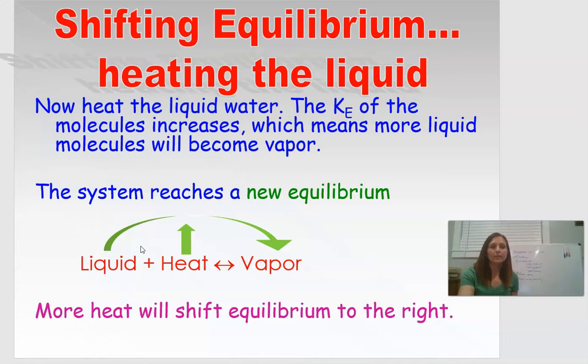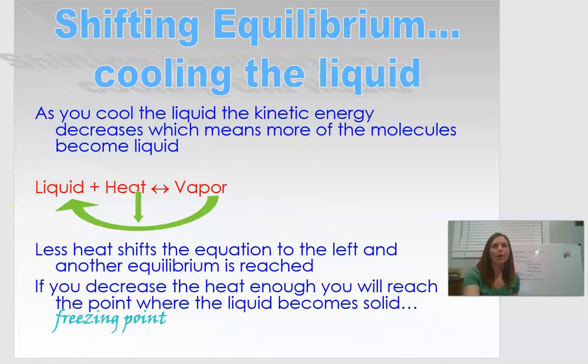The second way we can shift the equilibrium is we can shift it the other way. We could start to remove heat. So if we take the direction where we're going to pull heat out of the system, we can cause the vapor to condense into liquid.